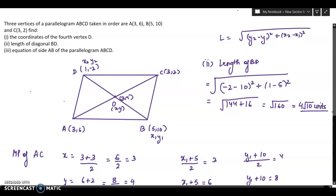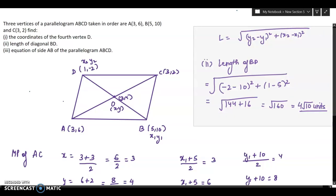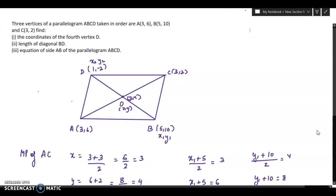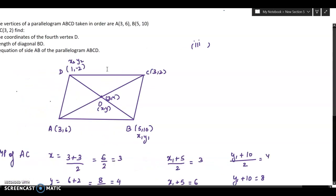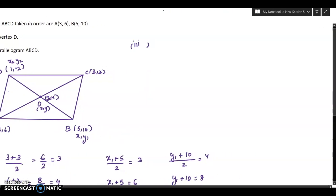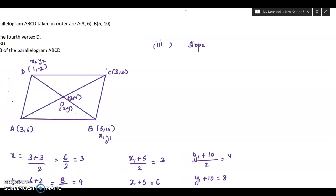Third is equation of side AB of the parallelogram ABCD. You have to find out the equation of side AB. First, we have to find out the slope of AB. The formula of slope is y2 minus y1 divided by x2 minus x1. This is A and this is B: x1, y1 and x2, y2. You can take this as x1, y1, it doesn't matter. The answer will be same in both cases.